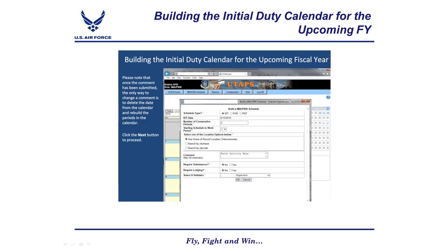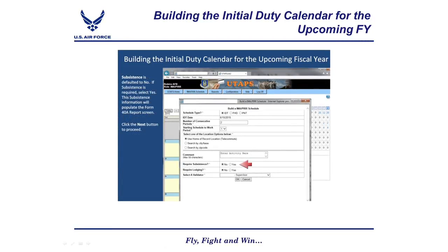Subsistence is defaulted to no. If subsistence is required, select yes — this subsistence information will populate the Form 40A report screen. Lodging is also defaulted to no. If lodging is required, select yes. The lodging information will populate the Form 40A report screen. Note that off-base lodging will require non-availability documentation.